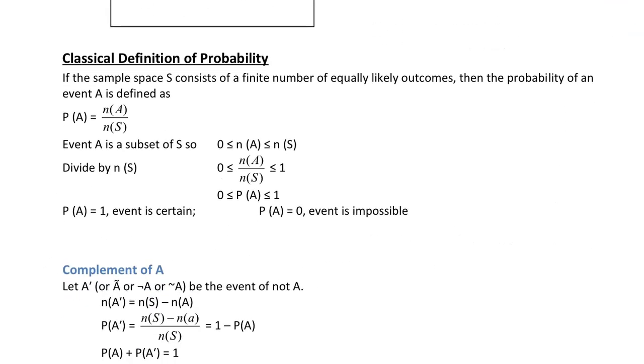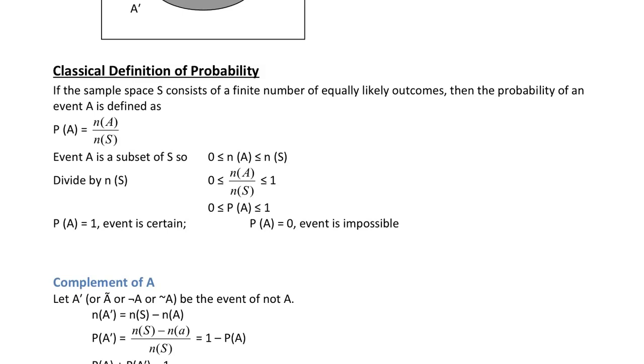Just to start off, the classical definition of probability. What we mean here is the probability of an event A happens is the number of ways you can get the event A divided by the total number of possible outcomes or the number of elements in your sample space. So that's very important that we understand all of that.